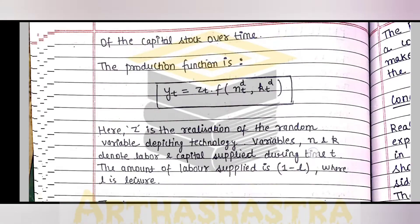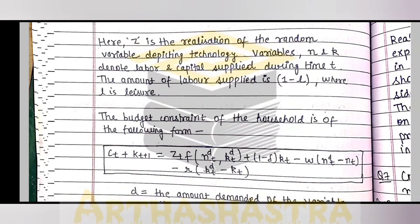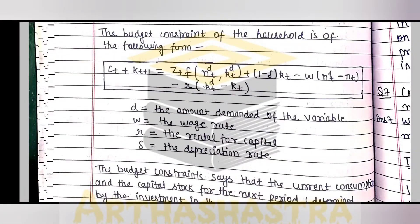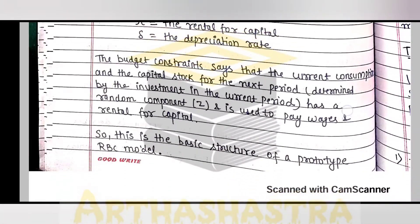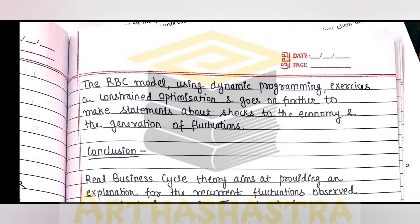The amount of labor supplied is one minus L, where L is leisure. Now we have written down the budget constraint faced by the household using various notations, and we are explaining what the budget constraint essentially means. We have defined the basic structure of the prototype model, and this is sufficient for a 12-marker.